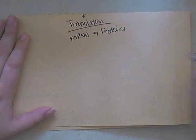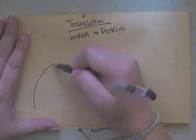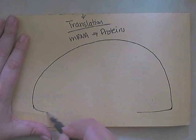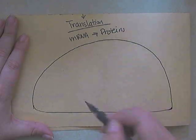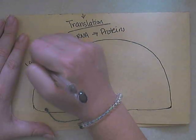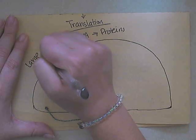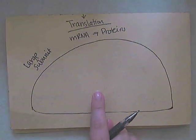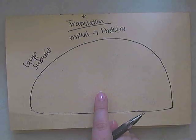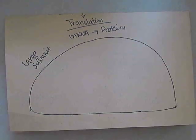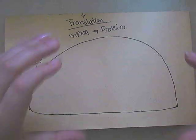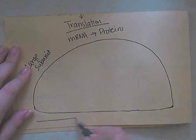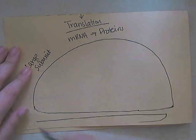In order to see how this process works, you need to know a little bit about the structure of the ribosome. Ribosomes are made of rRNA and proteins, and they're made in two different parts that come together. You have your large subunit and then you have your small subunit as well. Back in unit two we talked about ribosomes.